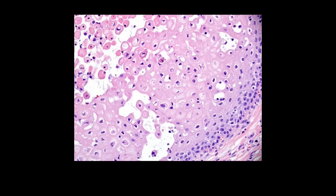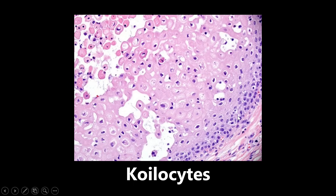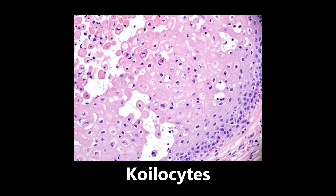This next image is an example of koilocytes. Basically, koilocytes are dysplastic squamous cervical cells. They have a raisinoid kind of appearance — this is a pretty good one right here — raisinoid nucleus. There's also hyperchromasia, so you see some darkening of the chromatin in the cells. This is pathognomonic for an HPV infection. So if you get a histology slide with this, you want to look at the nuclei — see if they have that raisinoid appearance and hyperchromasia — that means you want to be thinking about HPV infection with koilocytes.